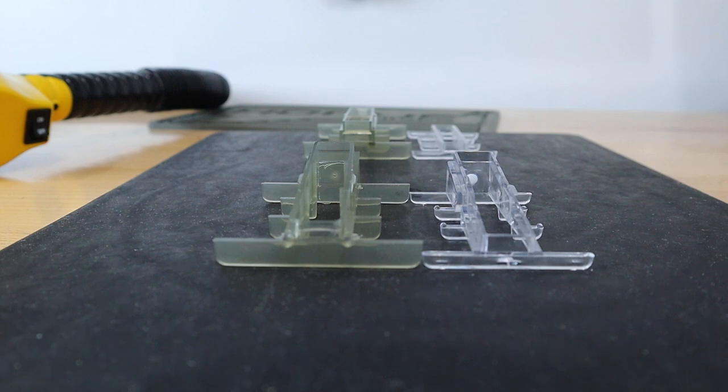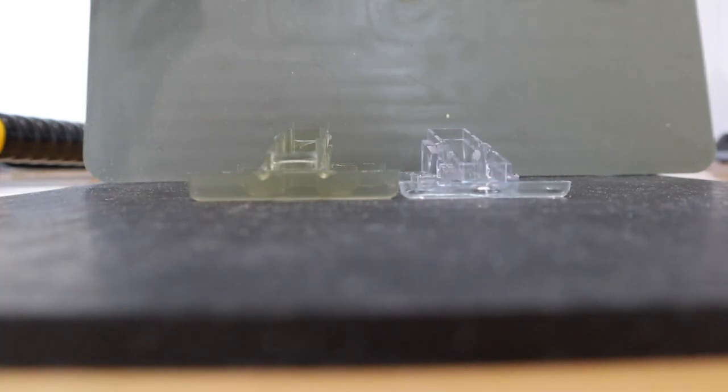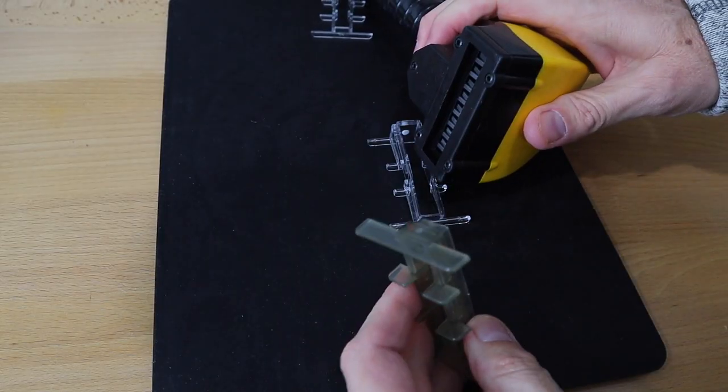Here's the difference on the angled attachment. Trying to get a good focus here, and hopefully you can see the difference in height. The clear spacer is about half the height as the colored spacer, which is the stock.